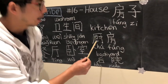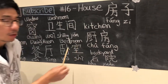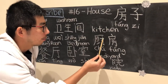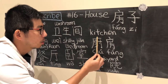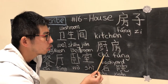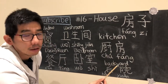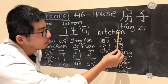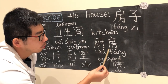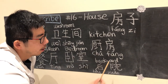Then we have the kitchen, where you do the cooking. The first part of the character means to cook. 房 is another way to say a room. So together we have the room where you cook, which is 书房.